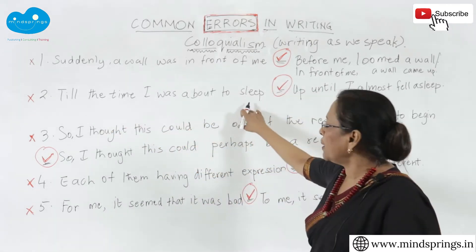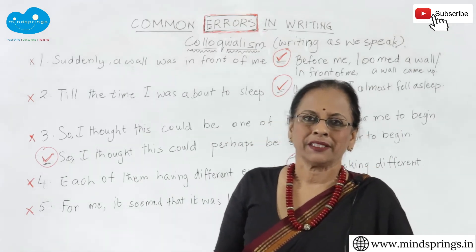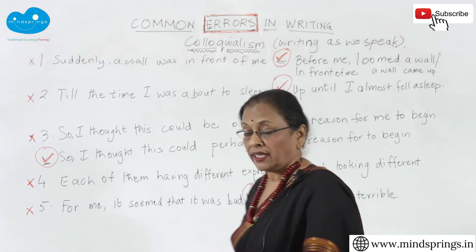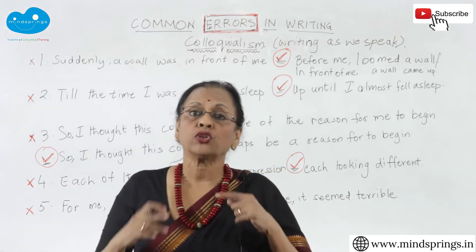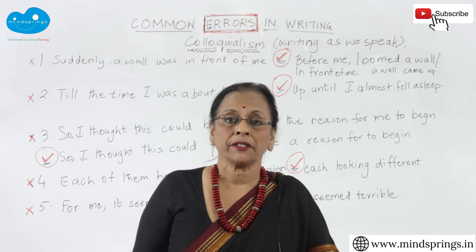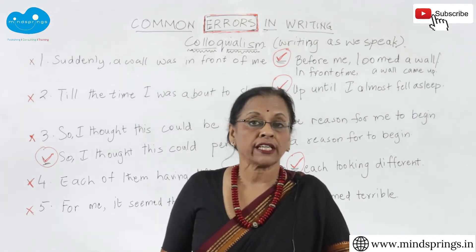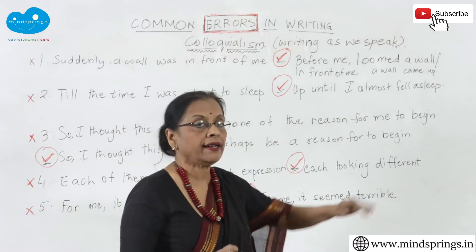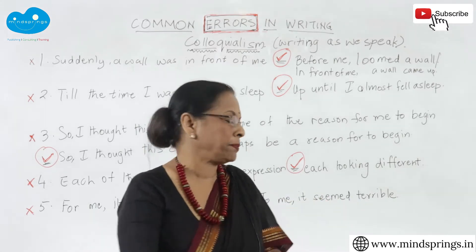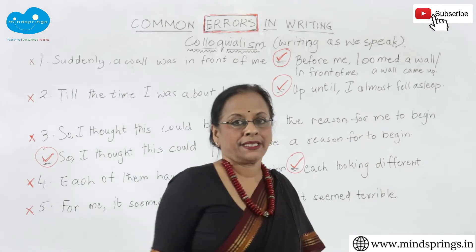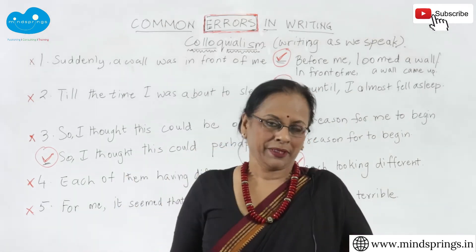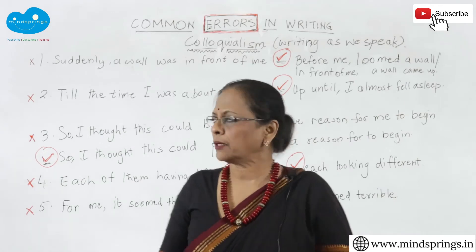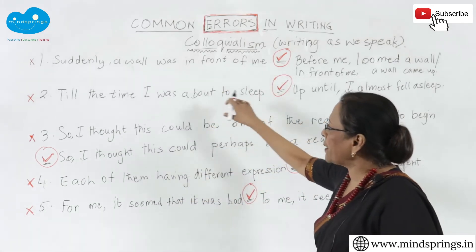The second colloquialism: 'till the time I was about to sleep.' This kind of language is spoken language. When you get the right construction, don't even speak incorrectly — catch yourself and say the right thing. Instead of 'till the time I was about to sleep,' you say 'up until I almost fell asleep.' 'Up until' means 'till that time.' 'I almost fell asleep' — 'to fall asleep' is a beautiful construction, so try and use that.